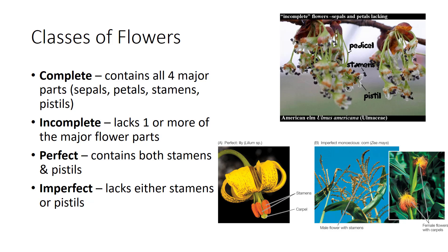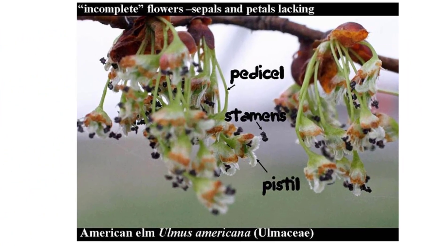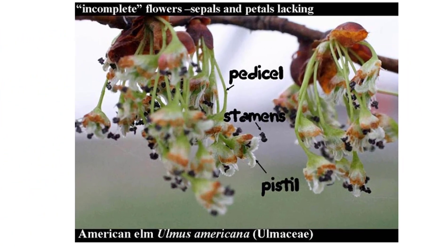Flowers can be broken down into four different classes. The complete flower contains all four major flower parts — sepals, petals, stamens, and pistils. The incomplete flower lacks one or more of the major flower parts. In the photo of the American elm, the sepals and petals are lacking. Since these plants are pollinated through wind, this allows the wind to pick up the pollen easier and for it to blow onto the pistil.